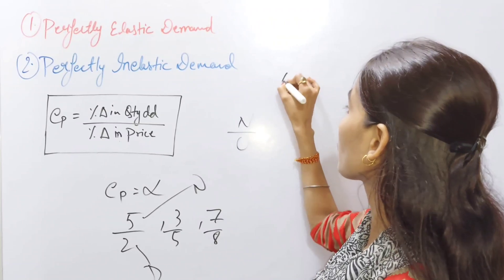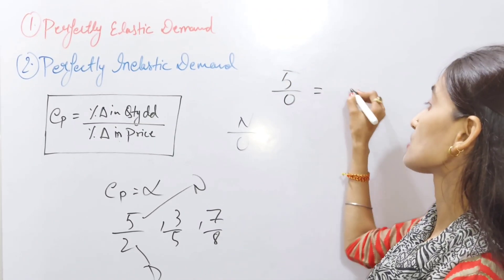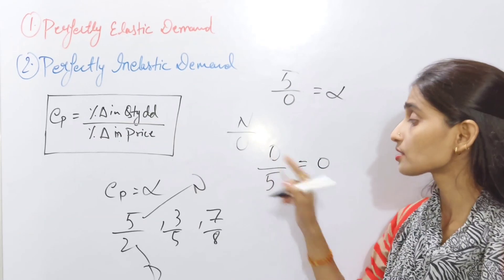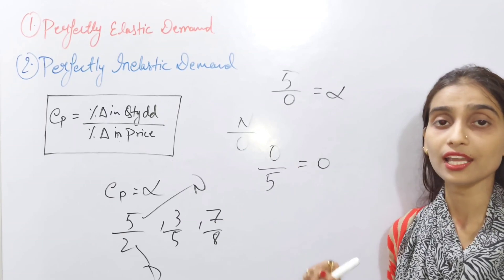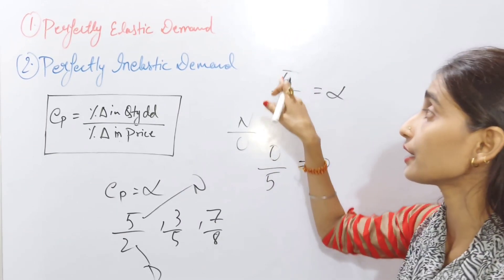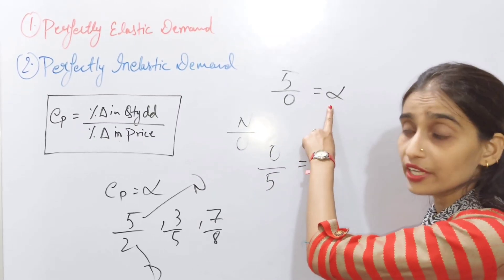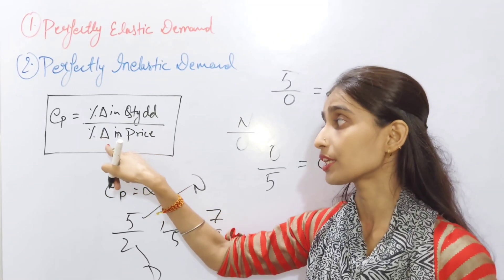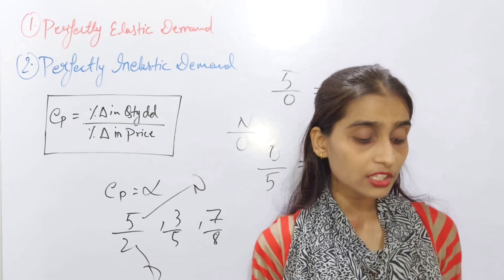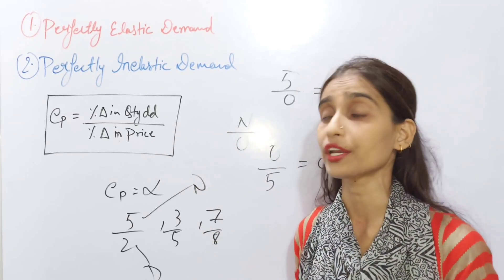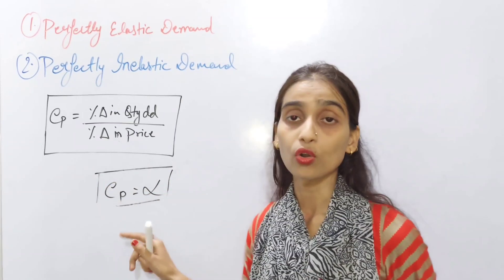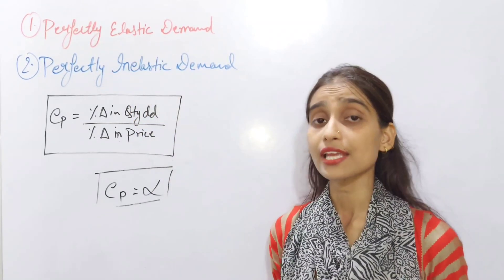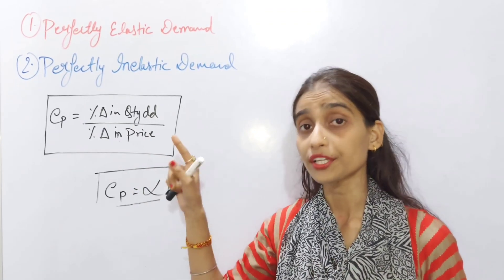Same case in perfectly elastic demand. The formula is percentage change in quantity demanded divided by percentage change in price. If EP equals infinity, that means denominator is zero. So in this case, percentage change in price is zero but quantity demanded is changing. For example, if a product's price is 10 rupees, you demand 20 kg; price stays at 10 rupees but demand becomes 40 kg, then 60 kg. Price is not changing but demand is changing — price has no effect here.